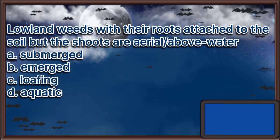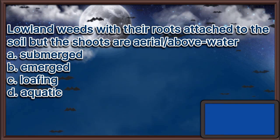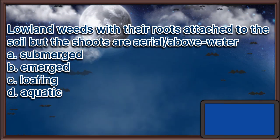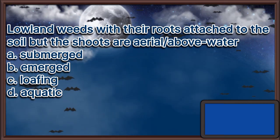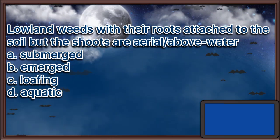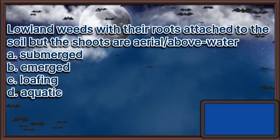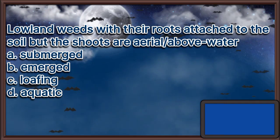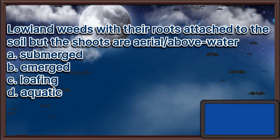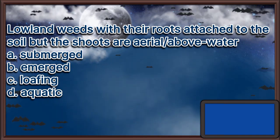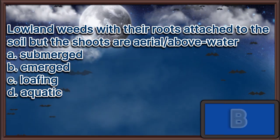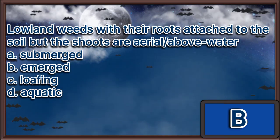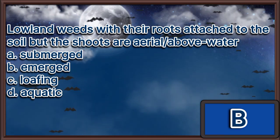Lowland weeds with their roots attached to the soil but the shoots or aerial parts above water: A. Submerged, B. Emerged, C. Floating, D. Aquatic. The answer is letter B.